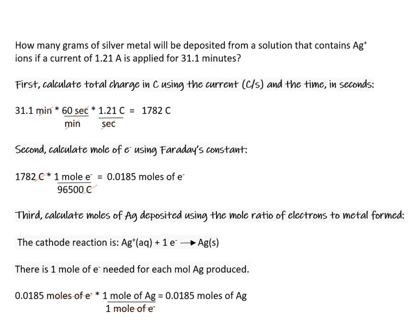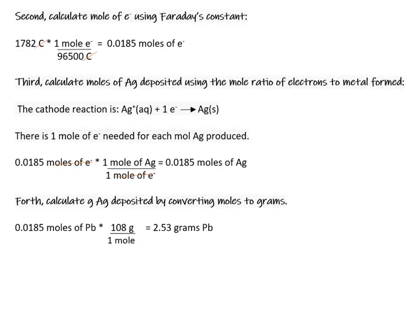Third, calculate the moles of silver deposited using the mole ratio of electrons to the metal formed. In the reduction of silver ion, one electron is required, so it's a one-to-one ratio between moles of electrons and moles of silver deposited. Finally, calculate the grams of silver deposited using the molar mass of silver.